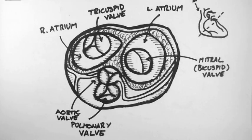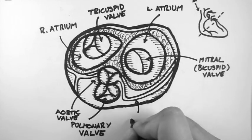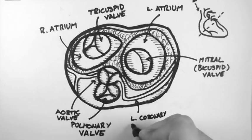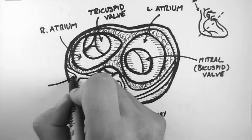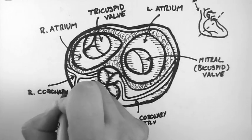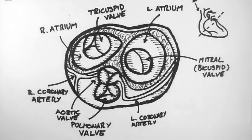Now arising from the aorta, actually within the cusps of the aortic valve arise the right and left coronary arteries. So here we have the left coronary artery. And over here we have the right coronary artery. And these are the arteries that supply blood to the heart itself.